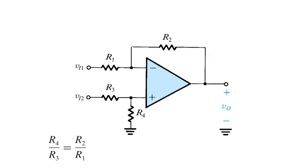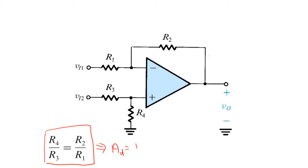Here's a simple difference amplifier circuit. It's easy to show that as long as we take the ratio of R4 over R3 equal to R2 over R1, we obtain a differential gain of R2 over R1 with infinite common mode rejection.